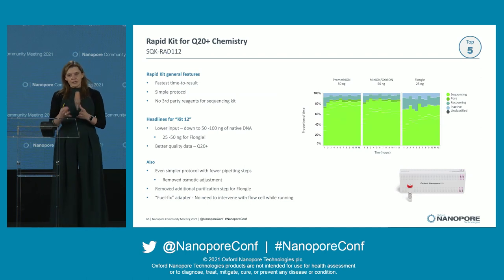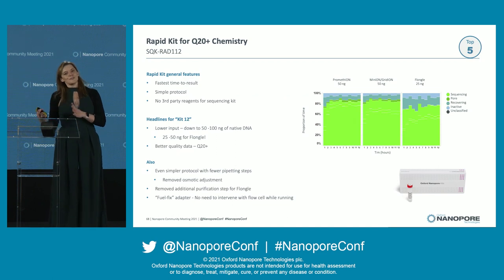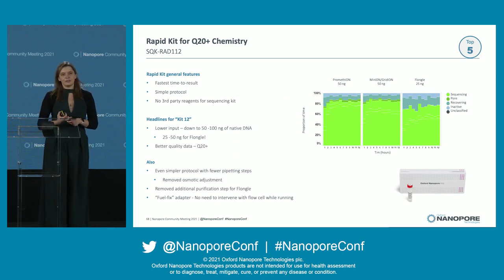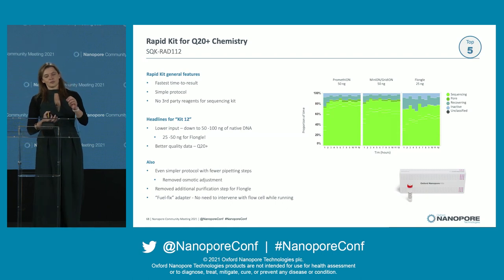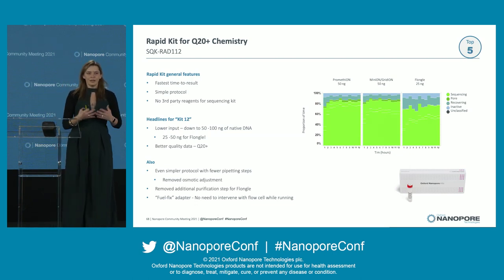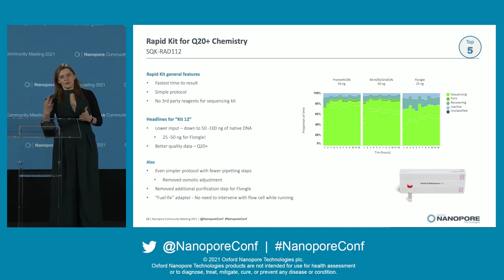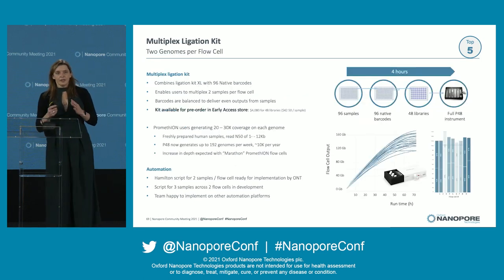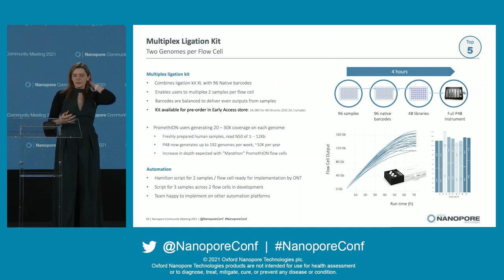Our rapid chemistry is getting upgraded to Q20 — enabling all of you who don't want to spend an hour and a half in the lab and just want to get your sample on, loaded, and sequenced. Key benefits aside from the Q20 chemistry include that reduced input, fixes for osmotic balance issues making it more Flongle-friendly, and a fuel-fix adapter which means it runs longer without the need for people to continue to top it up.